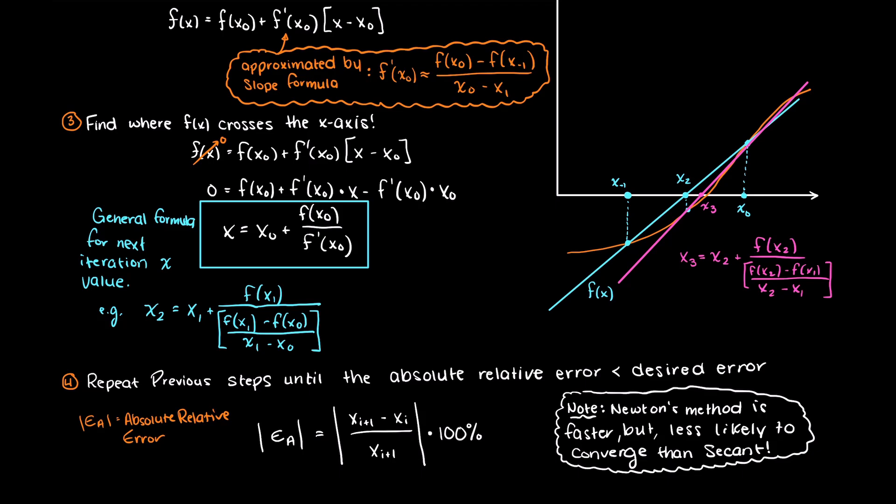Just as a final note, it is not a good idea to just randomly select your initial guesses for x. We often want to look at a graph and pick values near our root of interest. This will not only make convergence faster but also much more reliable.